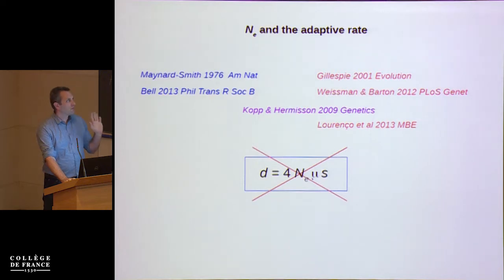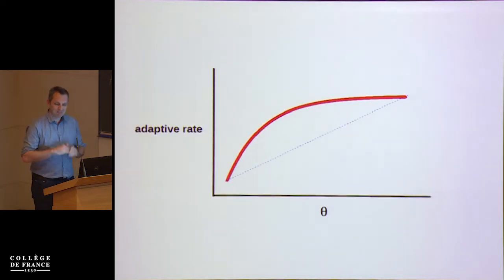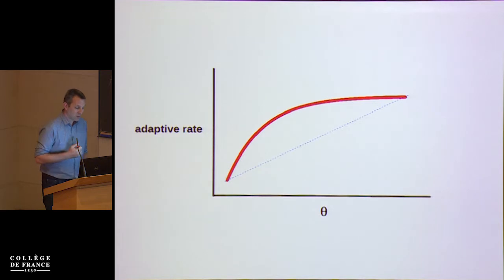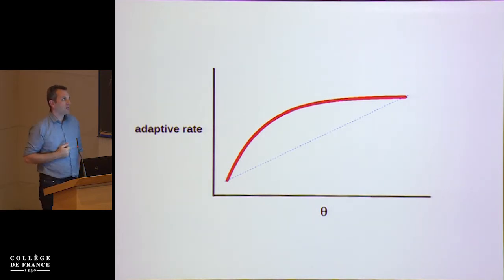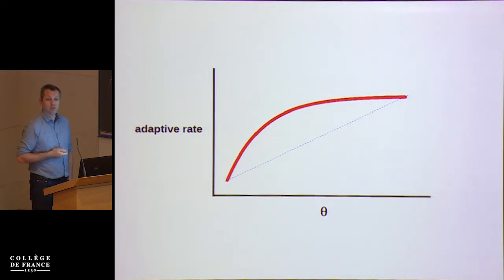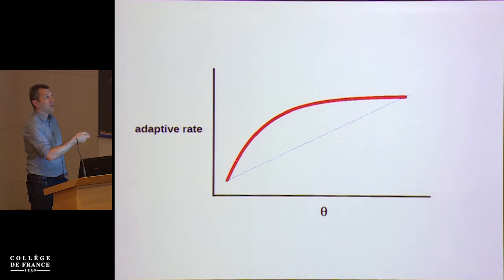A rough summary of this body of literature would be that the expected relationship between the adaptive rate and the effective population size is probably more like a saturation curve — the red curve — rather than a linear relationship. The real question is where on this plot true species are actually located: somewhere in the mutation-limited regime, or not mutation-limited.